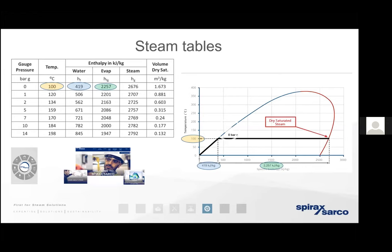Looking at the final column in the chart, that one kilogram of steam now occupies a much larger volume because it's a gas — 1.673 cubic metres. Once fully evaporated, that kilogram of steam has a total energy content of 2,676 kilojoules. The interesting thing is when the steam condenses, whether in the distributing pipework or at the heat exchanger, it's the enthalpy of evaporation — the latent heat — that is released across the thermal barrier into the process.